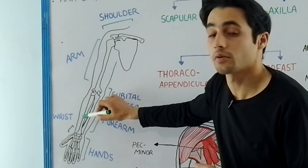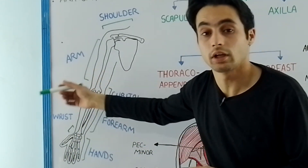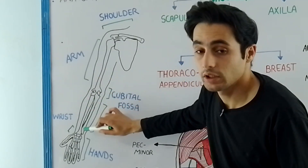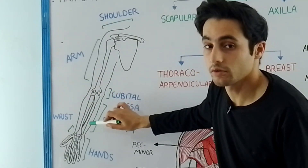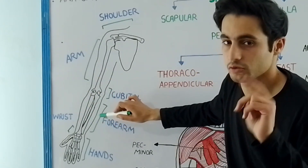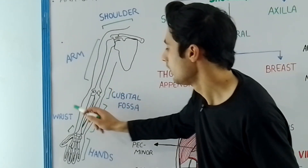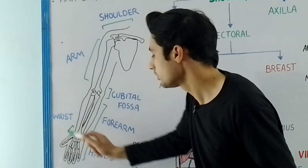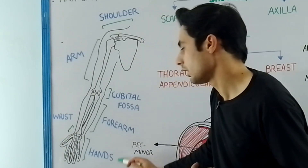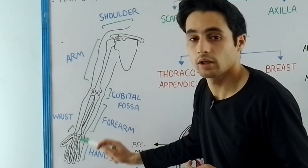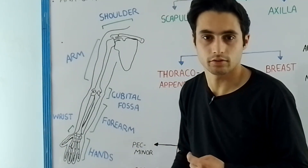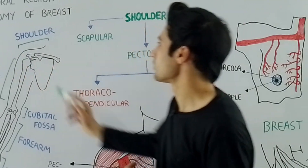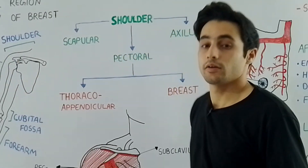The forearm consists of the radius on the lateral side and the ulna on the medial side. Then in the wrist we have the carpal and metacarpal bones, and in the hands we have the phalanges. Now let's discuss the shoulder region and why it is very important in upper limb anatomy.